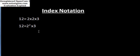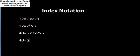Similarly, the next number is 40. Its factors can be written as 2 x 2 x 2 x 5, and we can find these factors by prime factorization method. So in index form we can write it as 40 equals 2 raised to power 3 and 5 as it is.